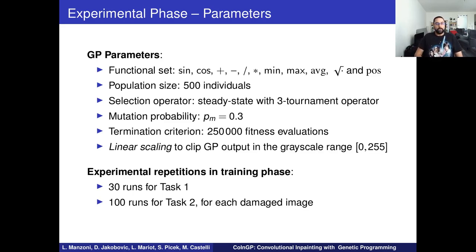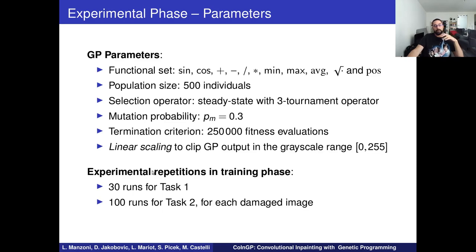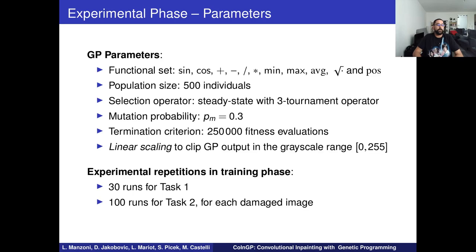For the experimental phase, we chose classic genetic programming parameter settings — functional set, population size, selection operator, and so on. The key difference from classic GP is the use of a linear scaling operator to clip the GP tree's output to the grayscale range of 0 to 255, since we use 8-bit grayscale images. For the first task on MNIST, we ran 30 independent runs for statistical significance; for the second task on each damaged image, we ran 100 independent runs.